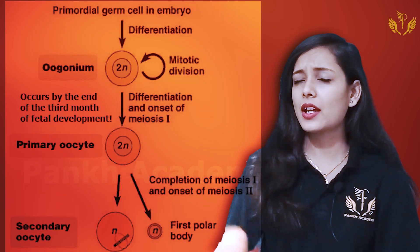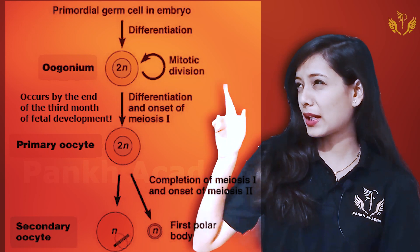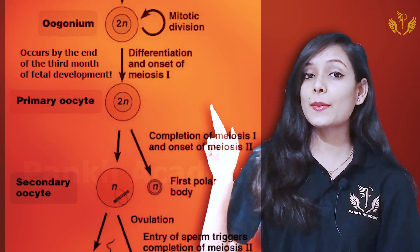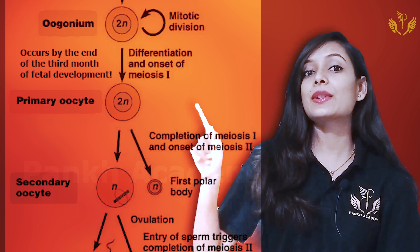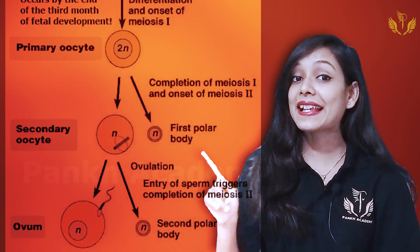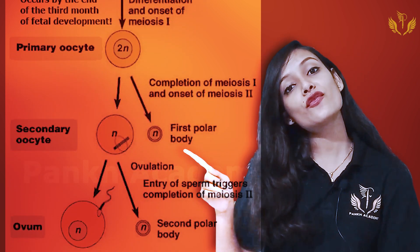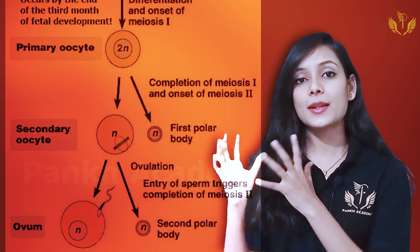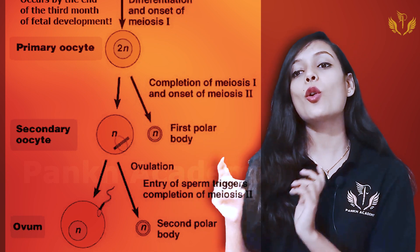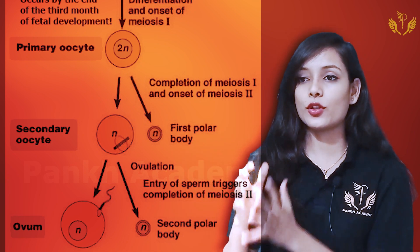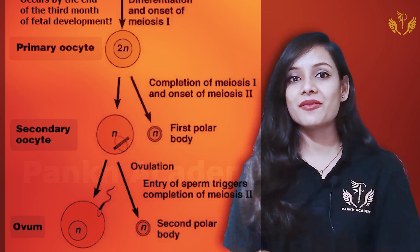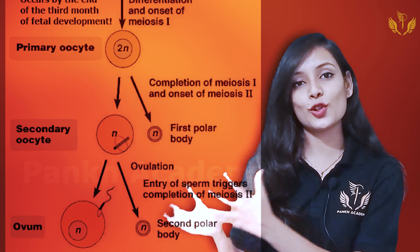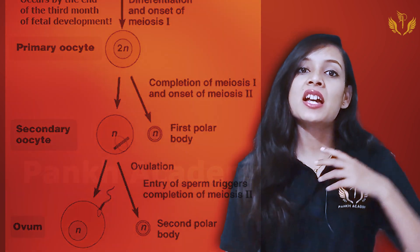Let's understand oogenesis through a diagram. Primary oocyte undergoes division to produce a secondary oocyte and a first polar body. The secondary oocyte then divides to form the ovum and a second polar body. The ovum is the final result that we need.